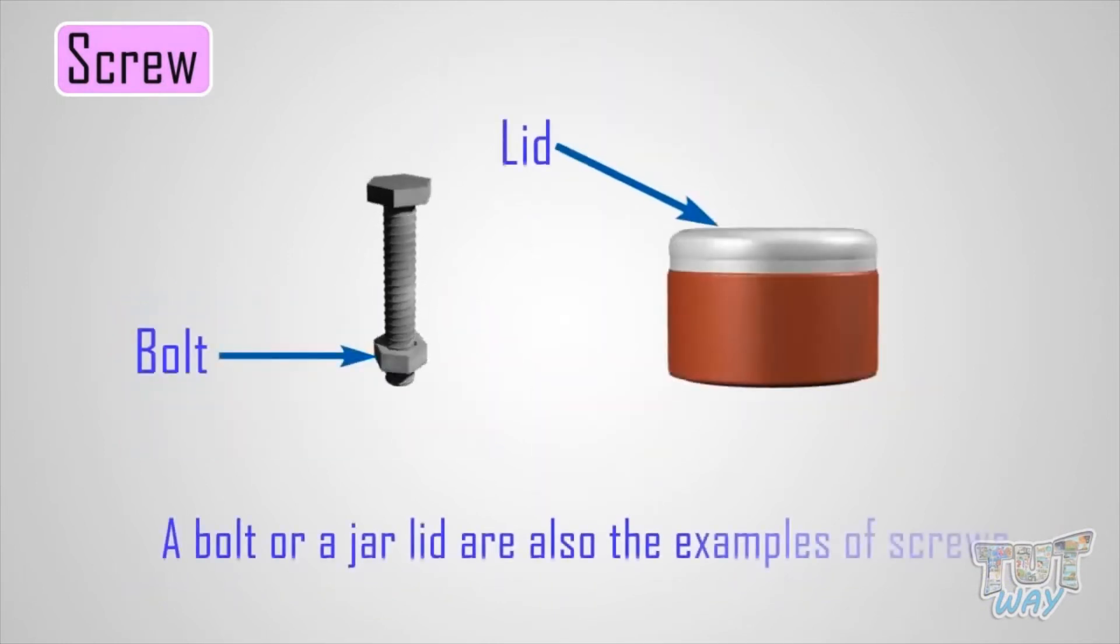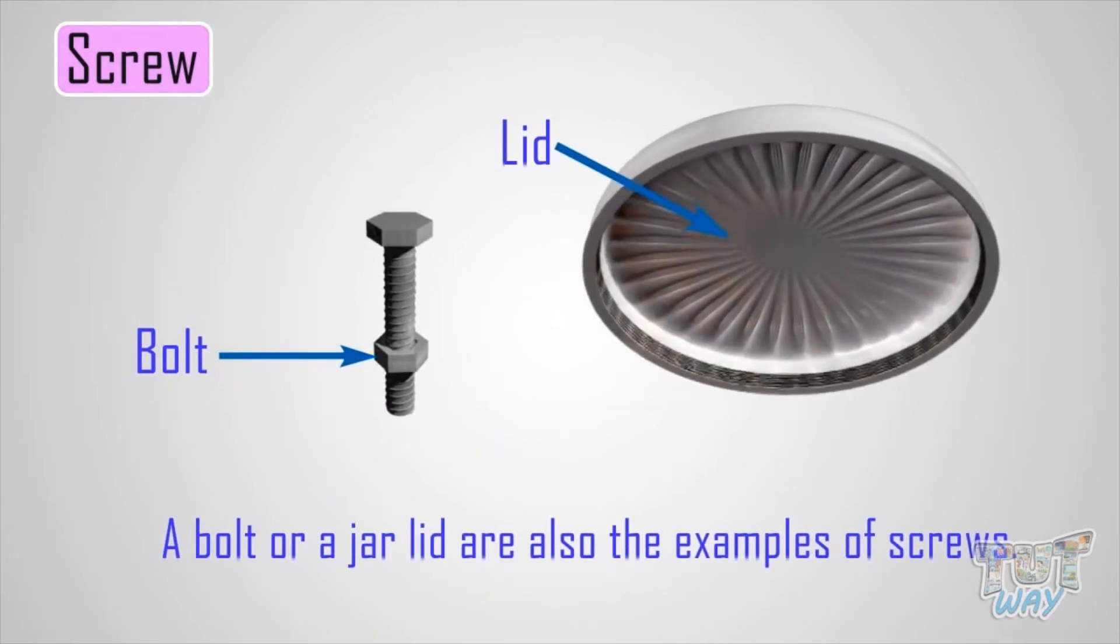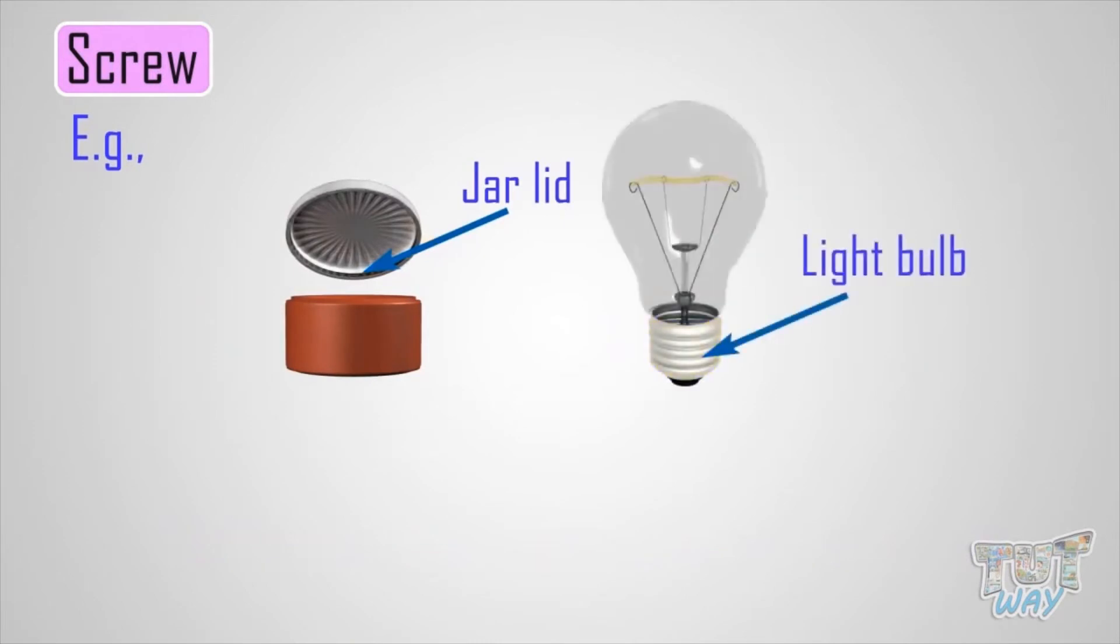A bolt and jar lid are also examples of screws. Screws can be found on jar lids and light bulbs.